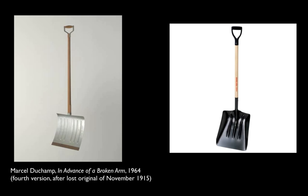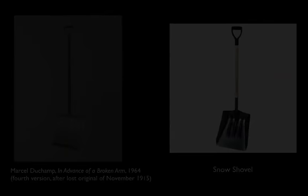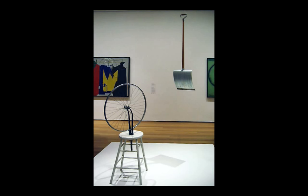In Advance of a Broken Arm — we're looking at it on the left. And you had to explicitly tell me that it was on the left, because they have a very similar piece on the right-hand side, just gotten off Amazon, which is a snow shovel. They're not much different at all — they both seem like snow shovels. Except that Duchamp has taken his snow shovel out of the hardware store, relocated it, reframed it, and said: this is a readymade — something to look at and to understand within an aesthetic sphere.